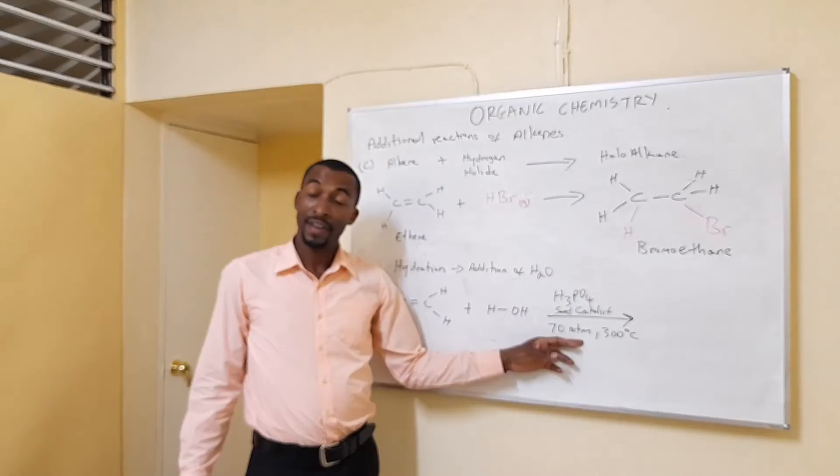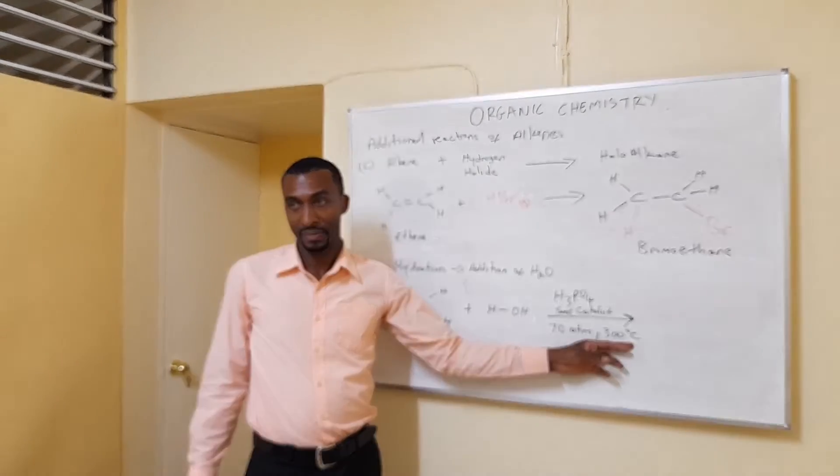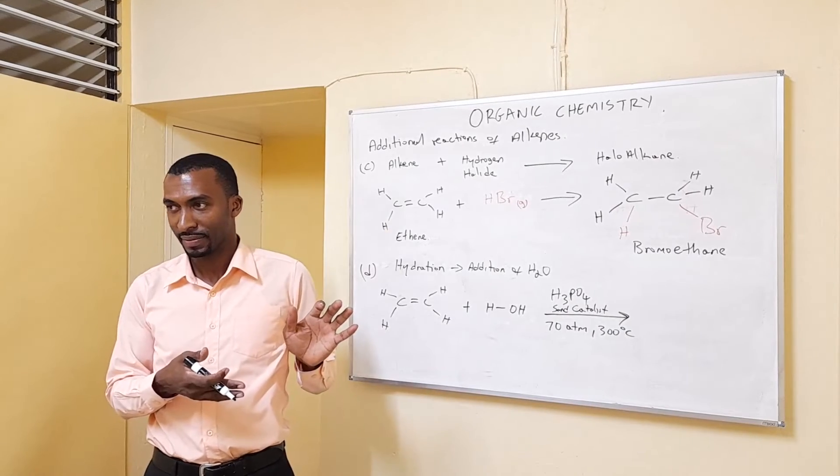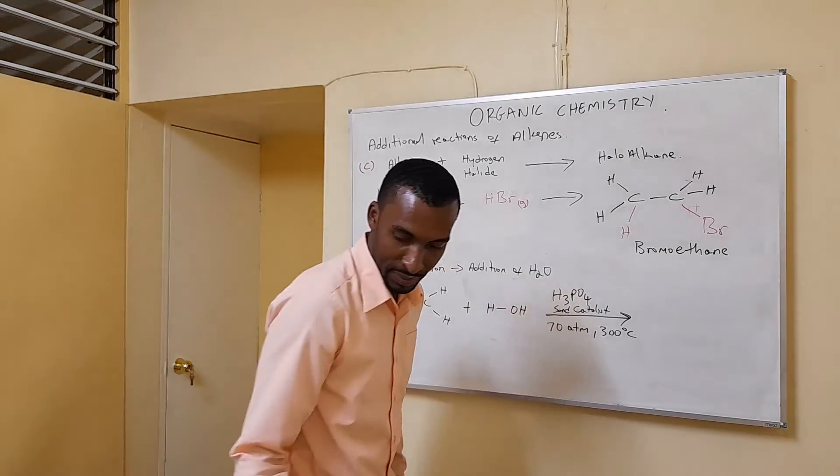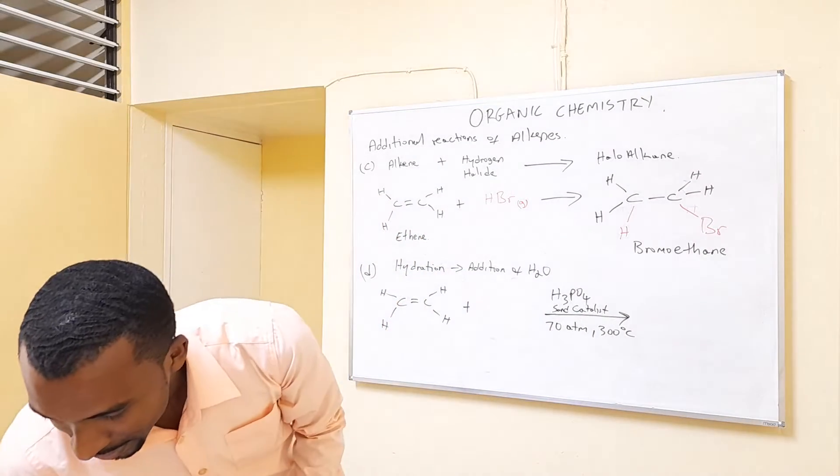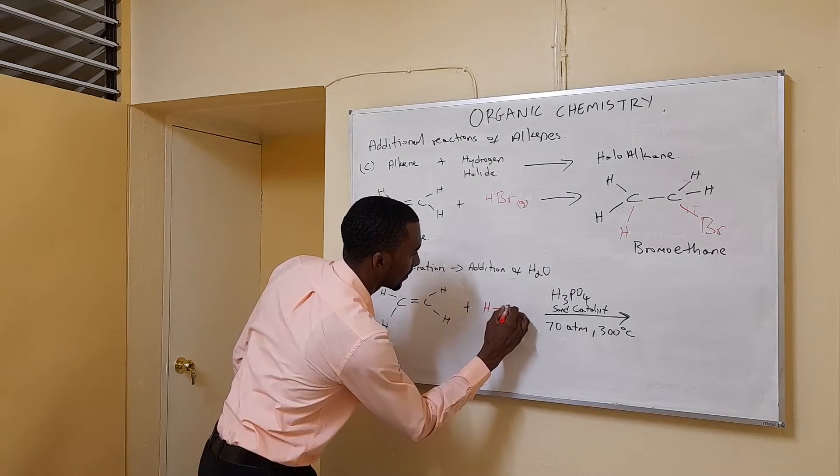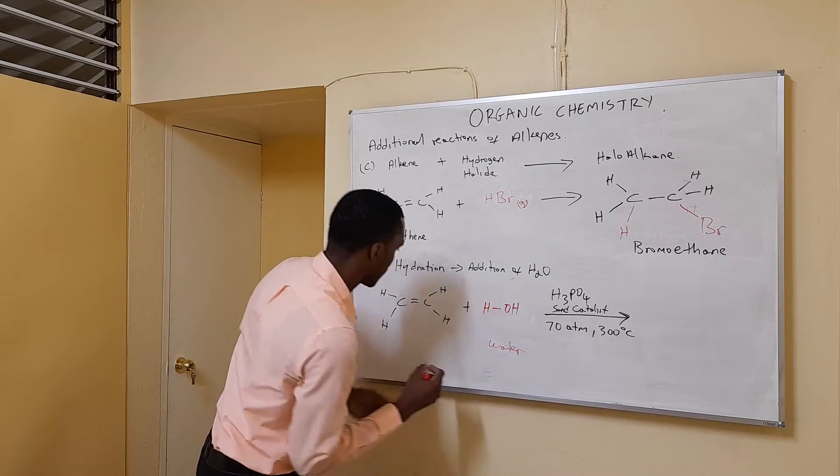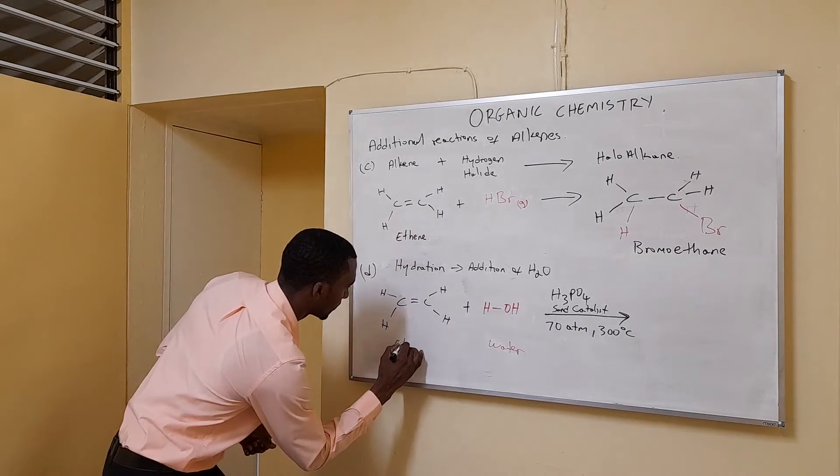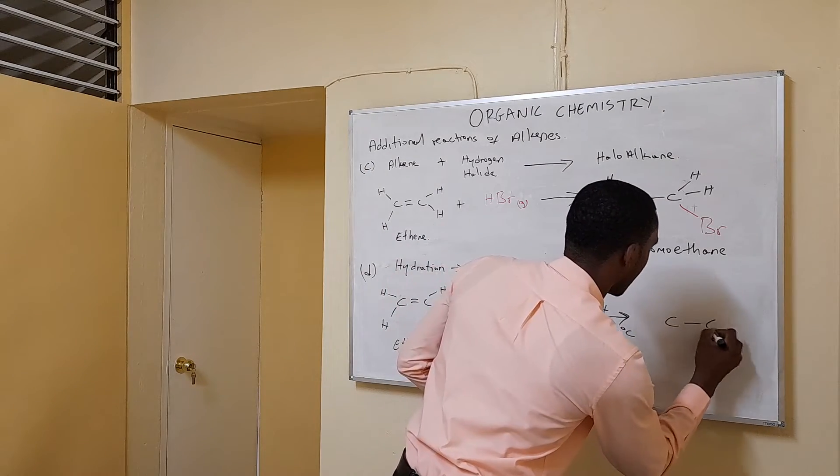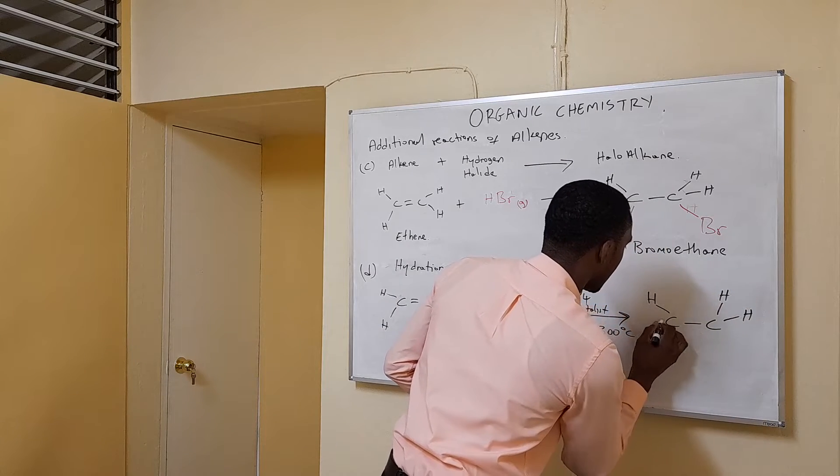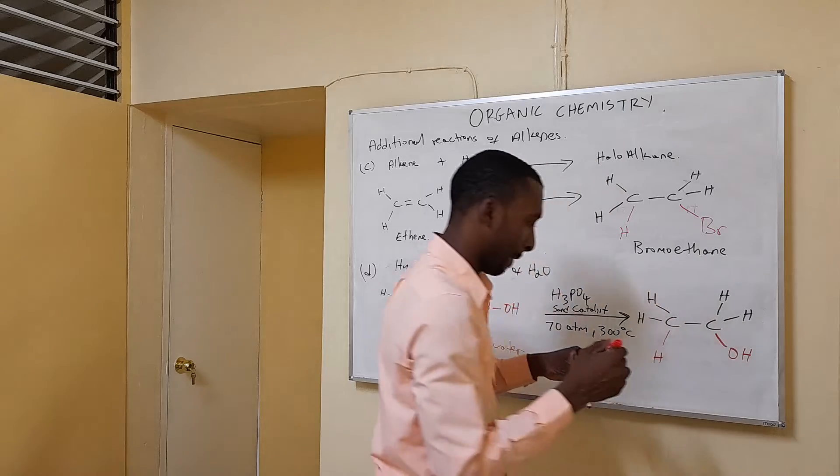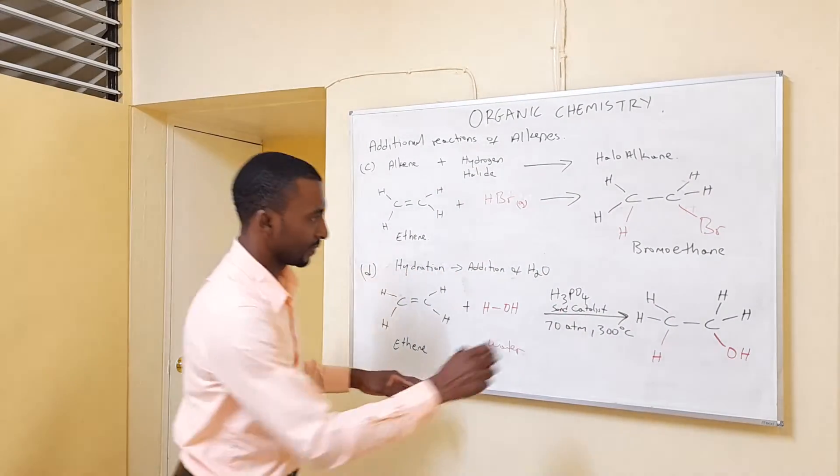As you can see in this case, it's very high pressure and very high temperature, in addition to the catalyst. They require higher pressure and higher temperature than in hydrogenation. In this case, you're going to produce ethanol. One hydrogen will go here, OH goes there. So as you can see, alcohol is formed which is ethanol.